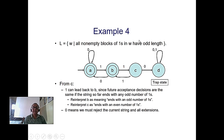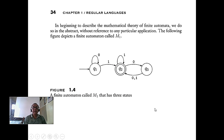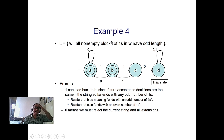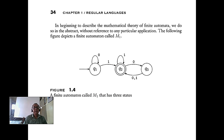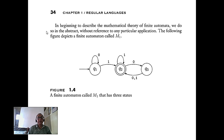Extending the design: there is a trap state, and this is the final complete design for that language. The design progresses: you start with two states, then upgrade to three states, then add a trap state D. So the final design has four states. This example is taken from Michael Sipser's book.